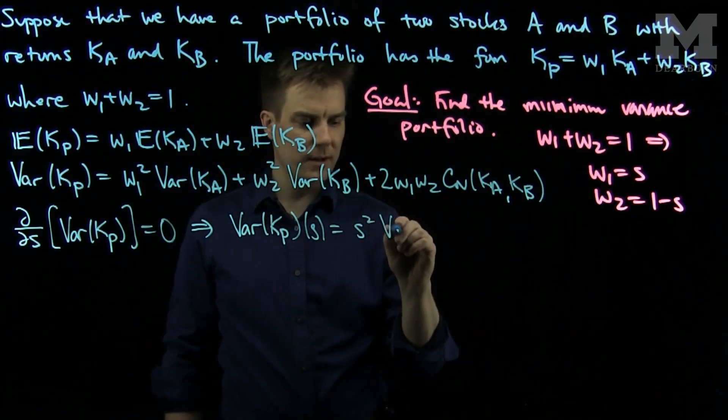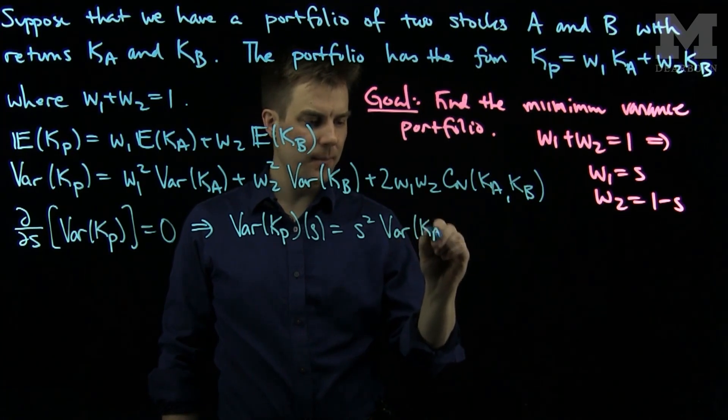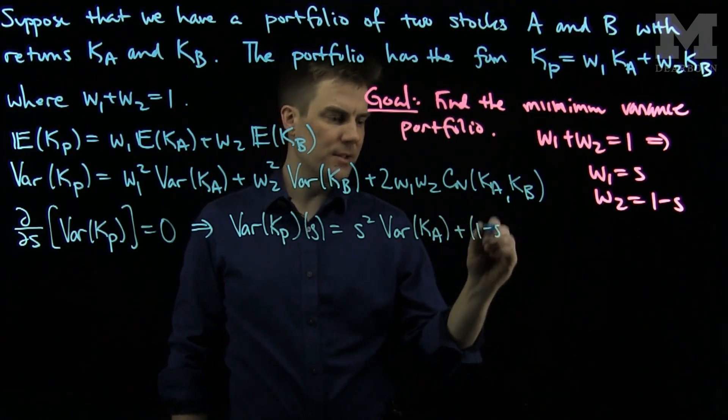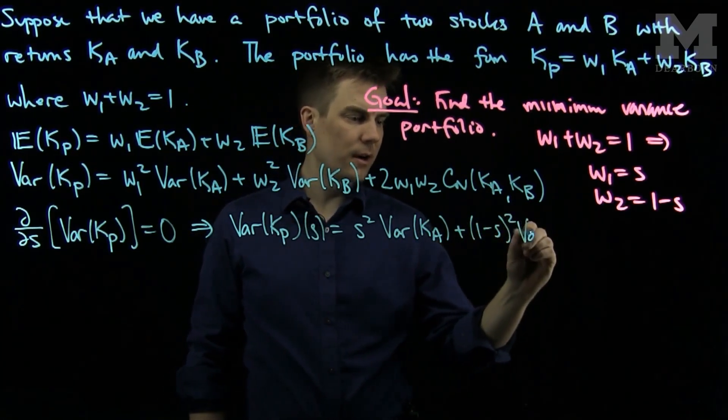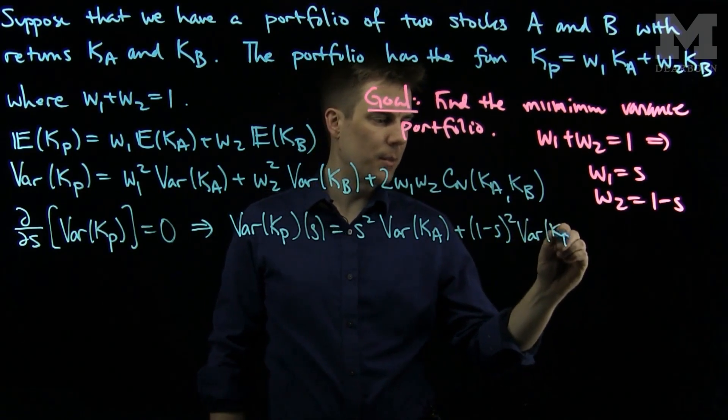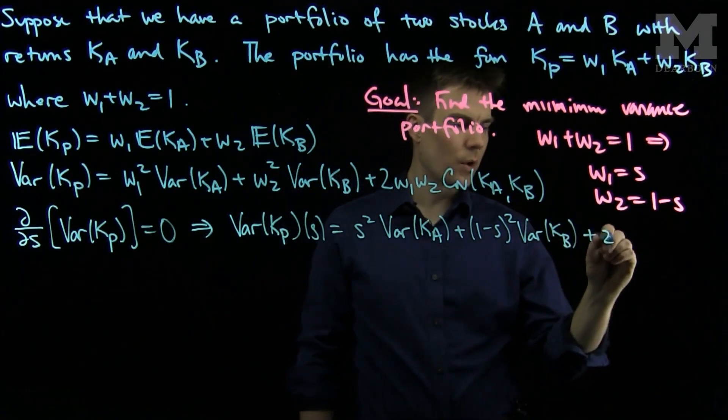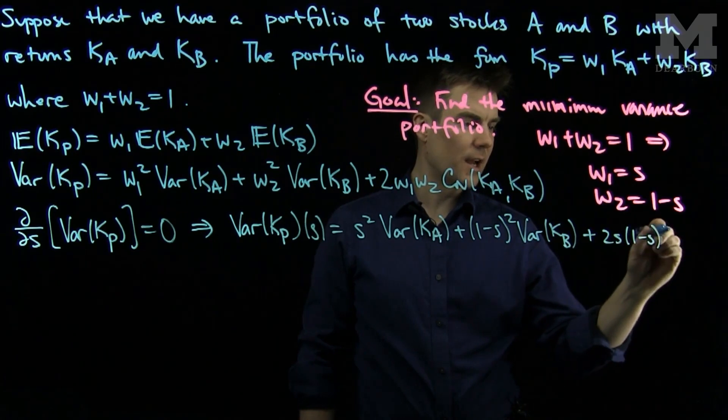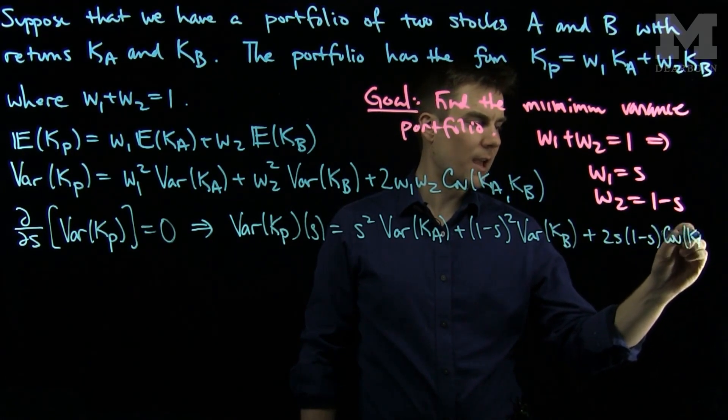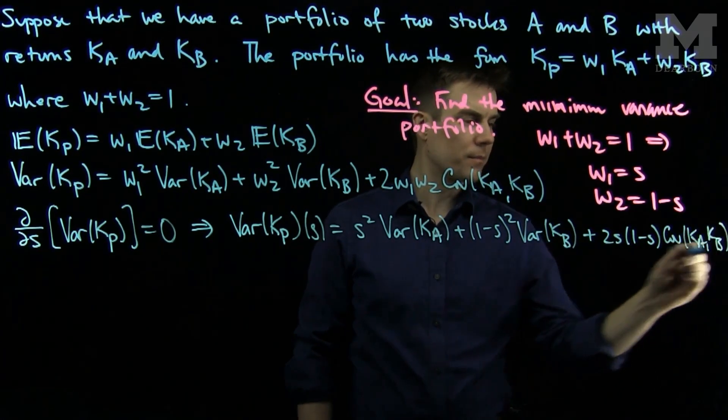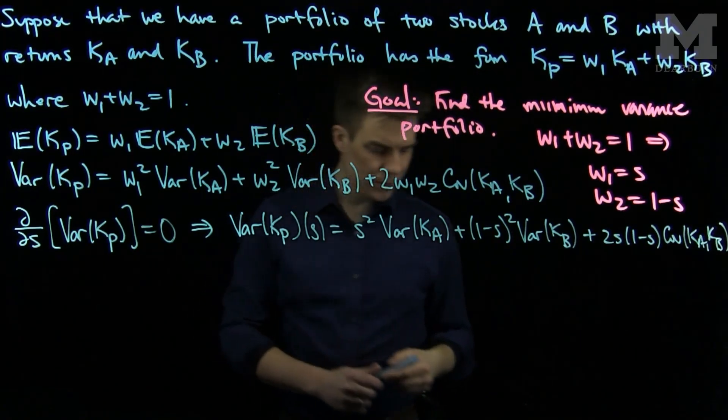So we will write variance of Kp as a function of S as S squared variance of Ka plus 1 minus S squared variance of Kb plus twice S, 1 minus S, the covariance of Ka and Kb.